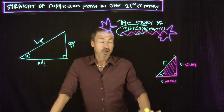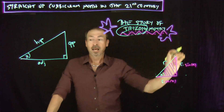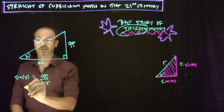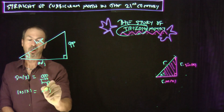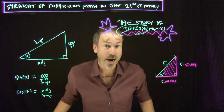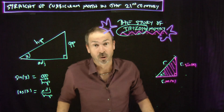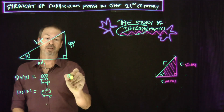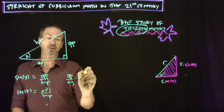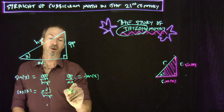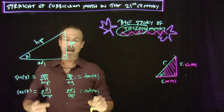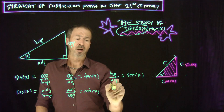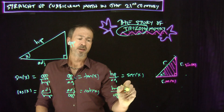Then step two — no mention of circles. We define sine of the angle to be the ratio of the opposite over the hypotenuse, and cosine to be the adjacent over the hypotenuse. And while we're at it, why not give names to all six possible ratios? Opposite over hypotenuse, adjacent over hypotenuse, opposite over adjacent — let's call that tangent of x. Adjacent over opposite — let's call that cotangent of x. Hypotenuse over adjacent — let's call that secant of x. And hypotenuse over opposite — cosecant of x.